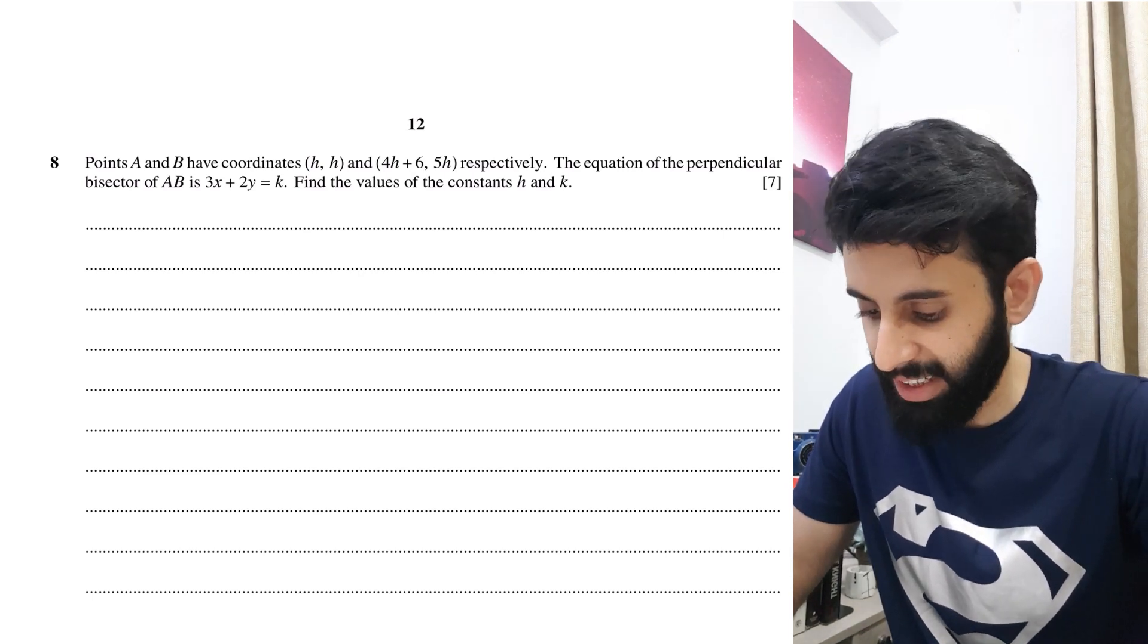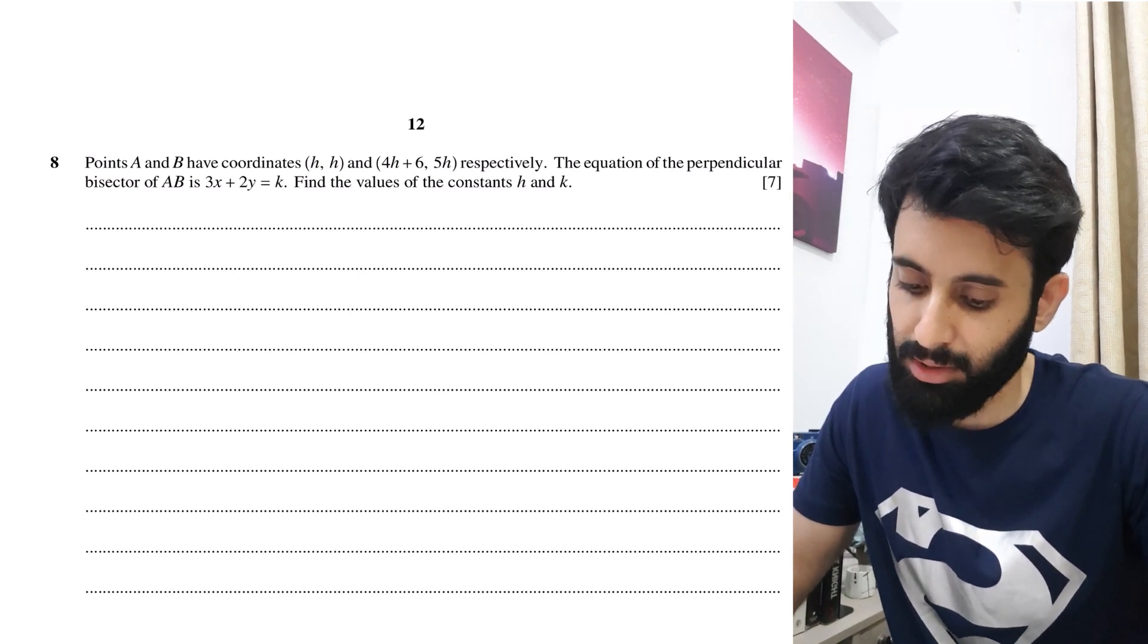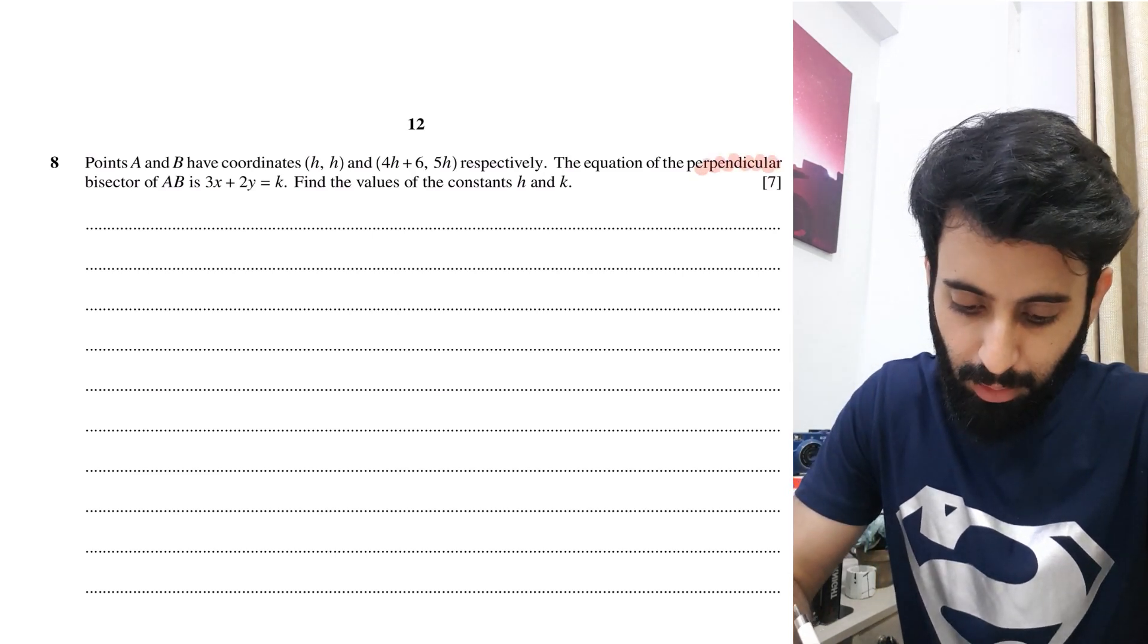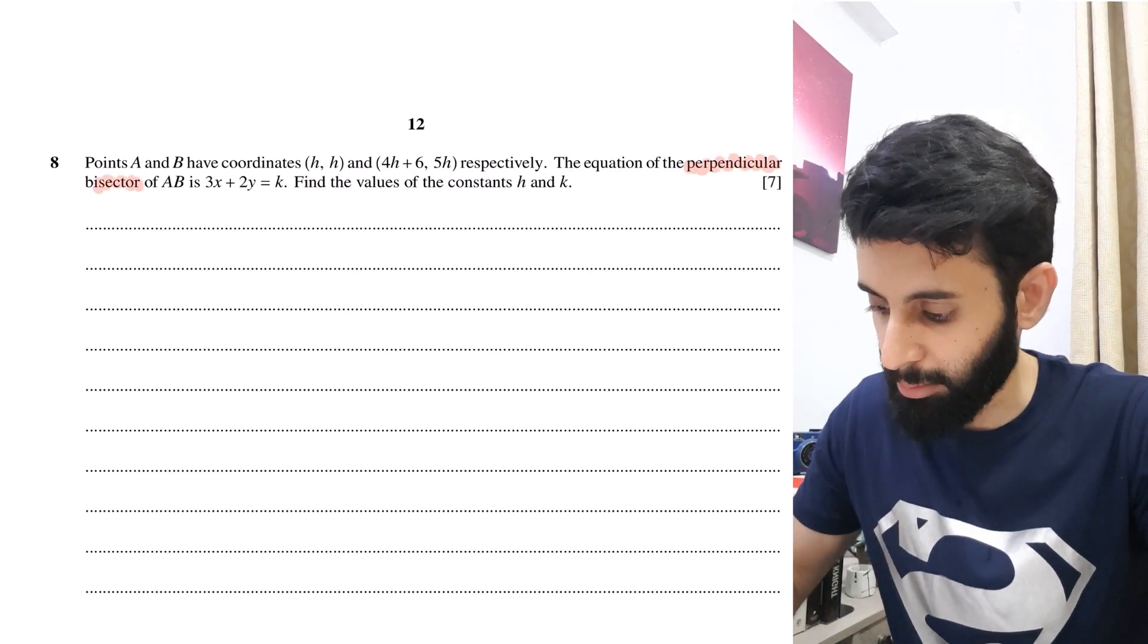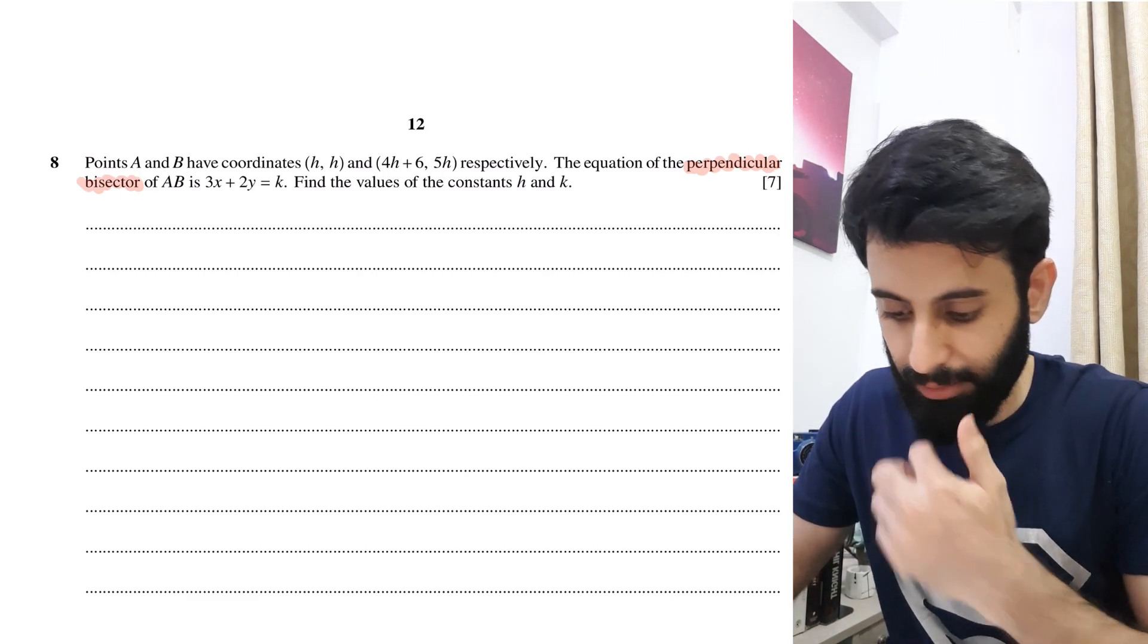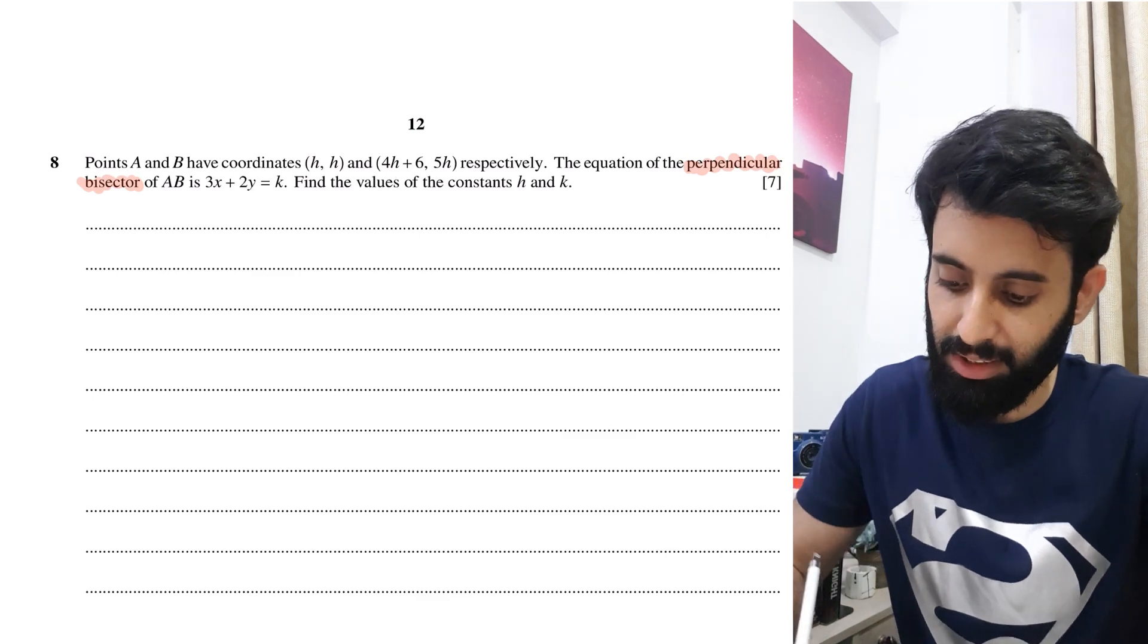It says, points A and B have coordinates (h, h) and (4h+6, 5h) respectively. The equation of the perpendicular bisector of AB is 3x + 2y = k. Find the values of the constants h and k.